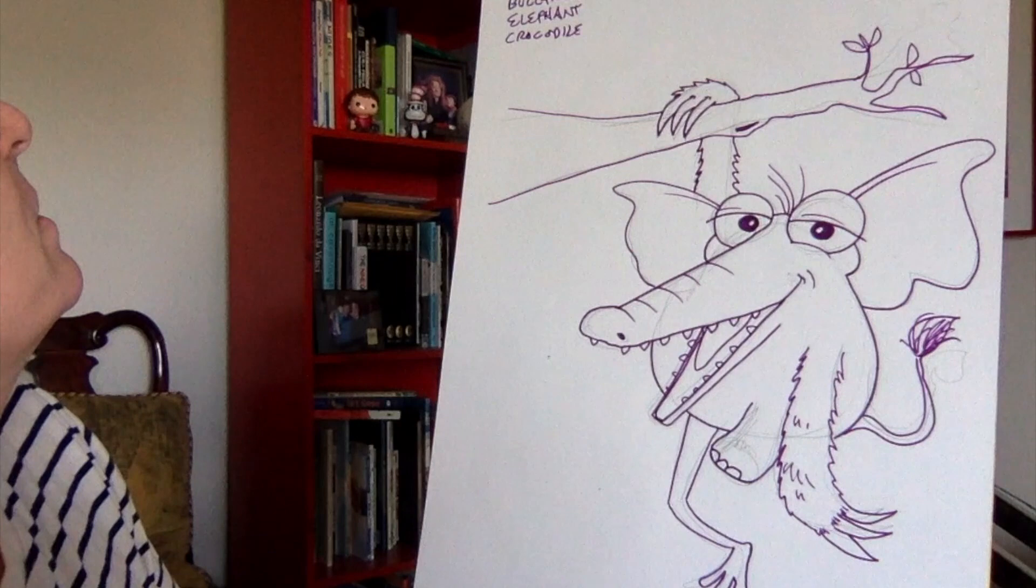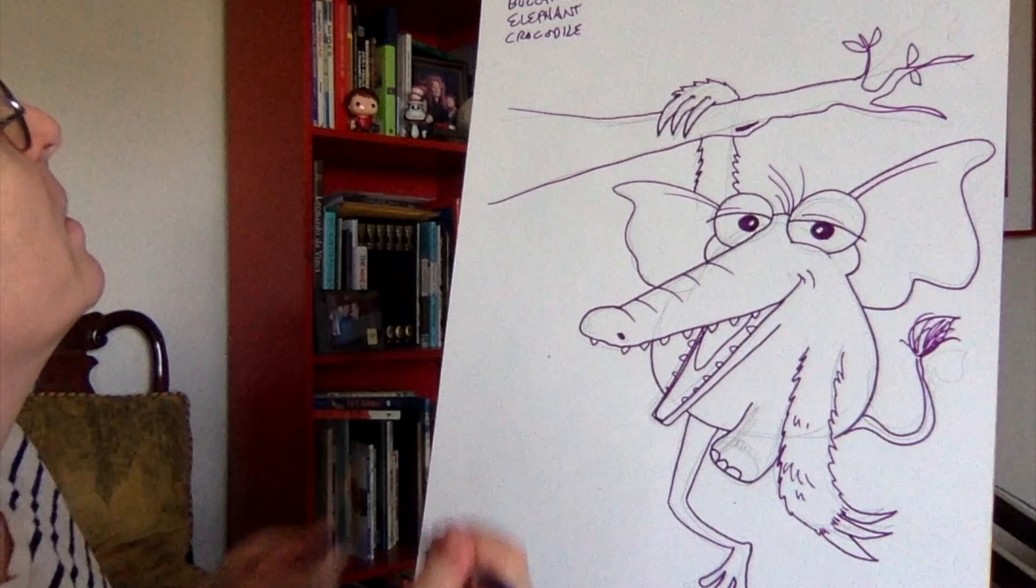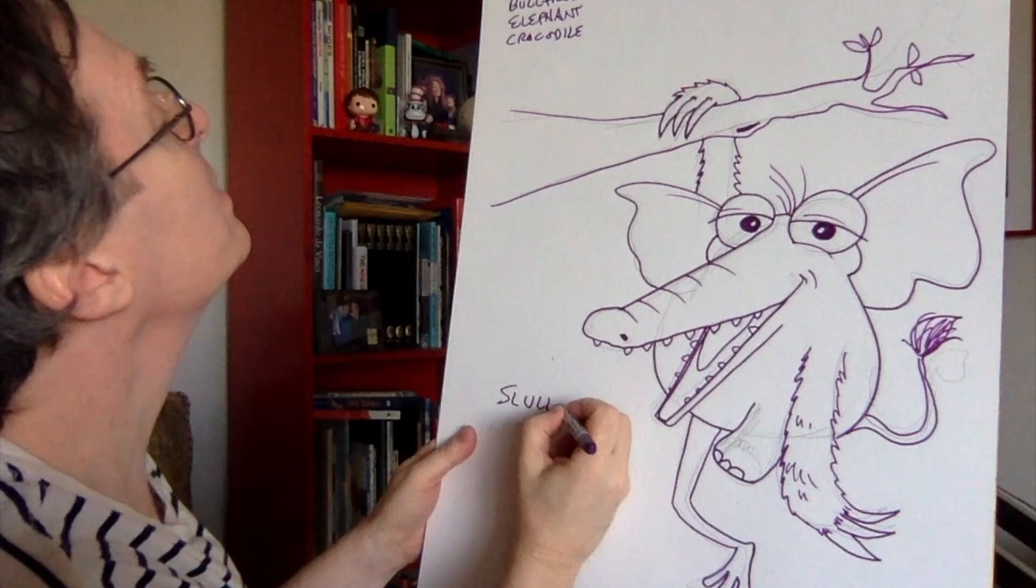I think we've got our second animash but it needs a name. Sloth, bullfrog, elephant, crocodile. How about slullophile? S-L from sloth, bull from bullfrog, o-ph from elephant, ile from crocodile. Sally the slullophile.